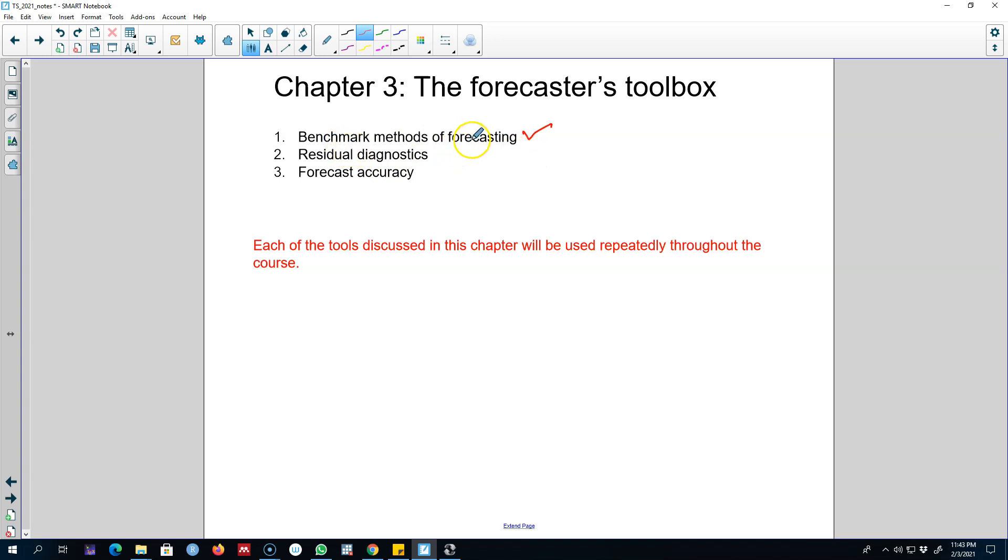So we'll talk about these simple methods to start this chapter, and then we'll go about the residual diagnostics. These diagnostics will help us to see whether we have utilized all the information. So essentially the point here will be to explore whether we are utilizing all the available information. If we are not utilizing all the information, then we can probably improve our forecasting by tweaking our model a little bit.